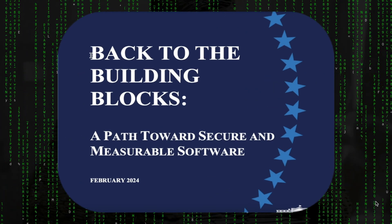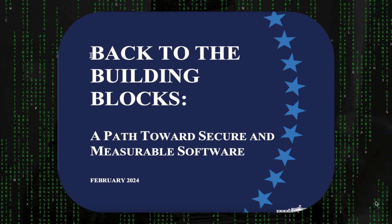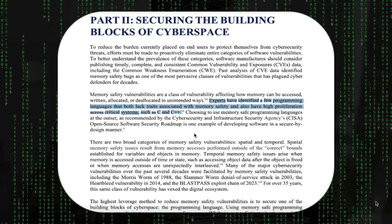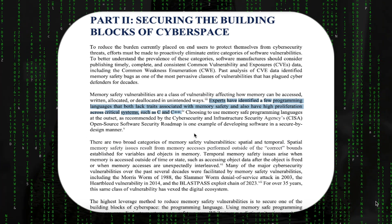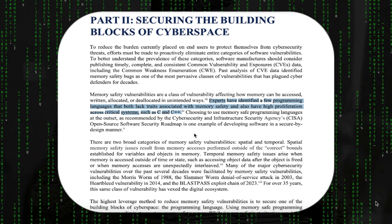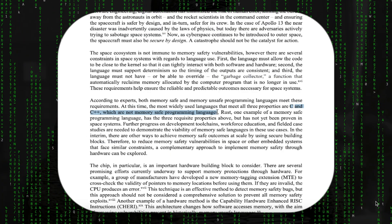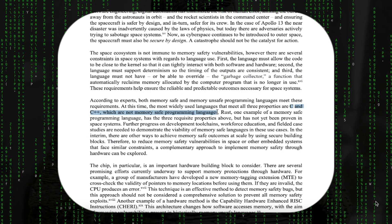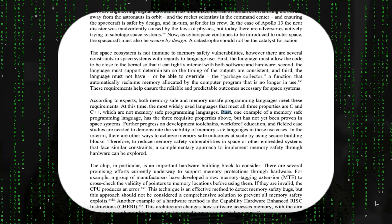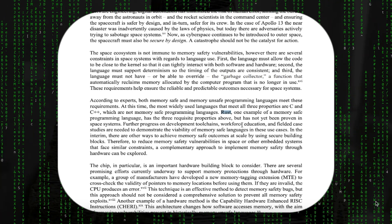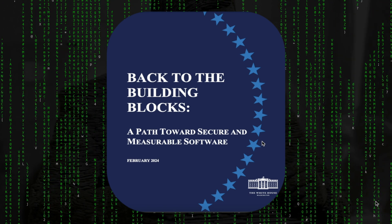Back to building blocks: a path towards secure and measurable software. Experts have identified programming languages that lack traits associated with memory safety — C and C++ are not memory safe. Rust, on the contrary, is an example of a memory safe language. This is essentially a pledge from the White House to write code in a safe language, not in C anymore.